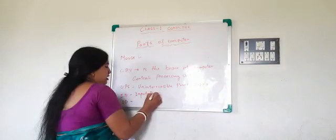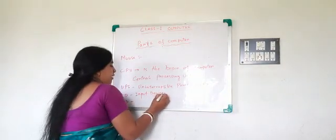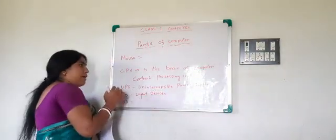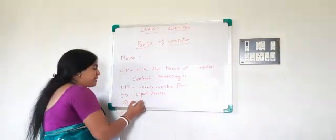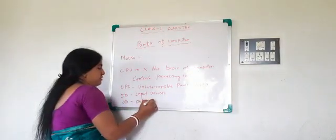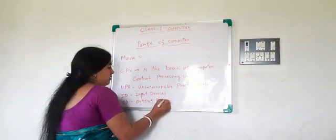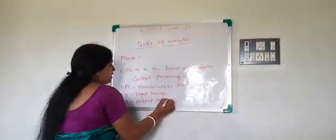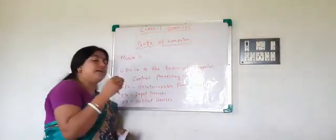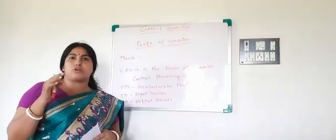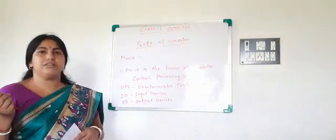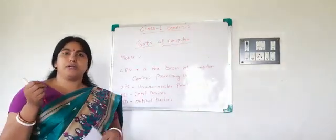Through these devices, we input the information in the computer. And OD means output device. Through these devices, we can see our results. So computer gives us its results through the output devices.